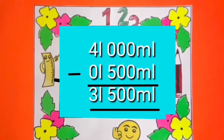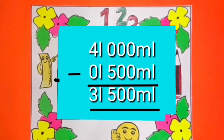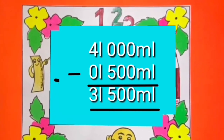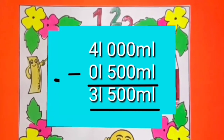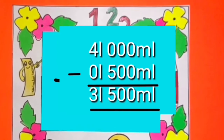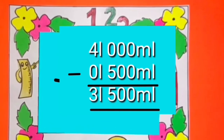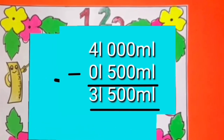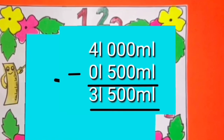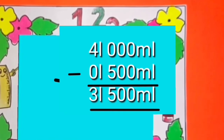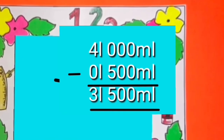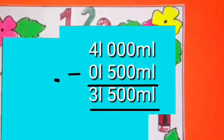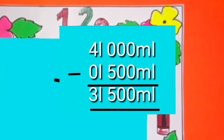Dear students, in mathematical pattern, we will solve this sum like this. We will write liters under liters and milliliters under milliliters. After subtracting 500 milliliters from 4 liters, we are left with 3 liters and 500 milliliters.